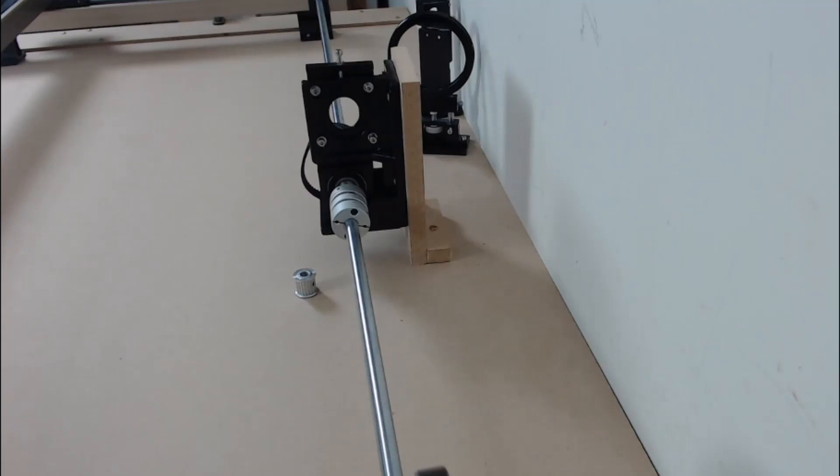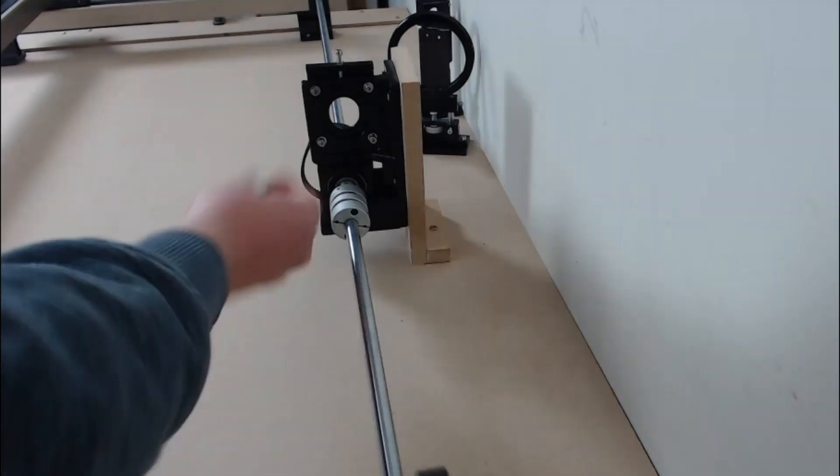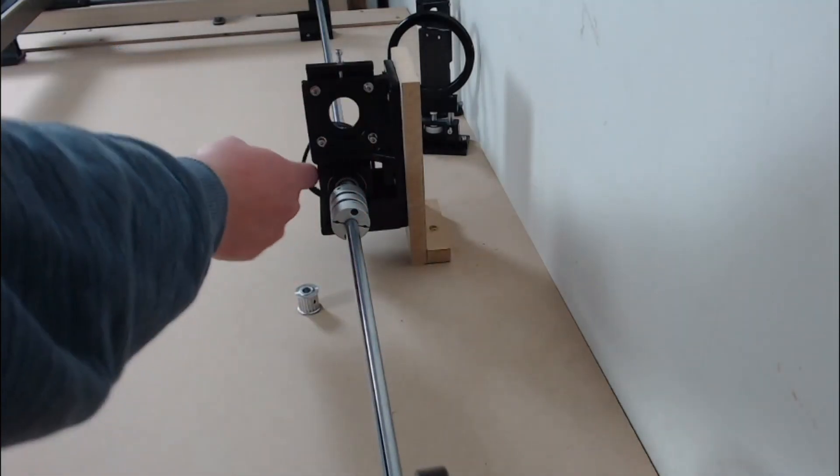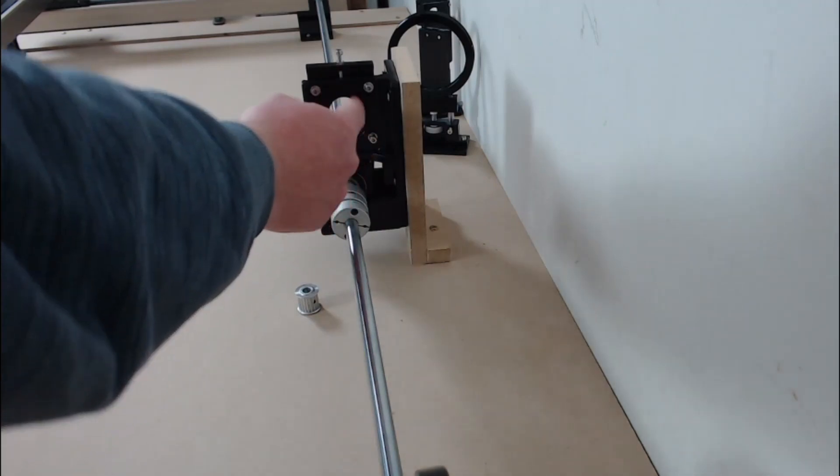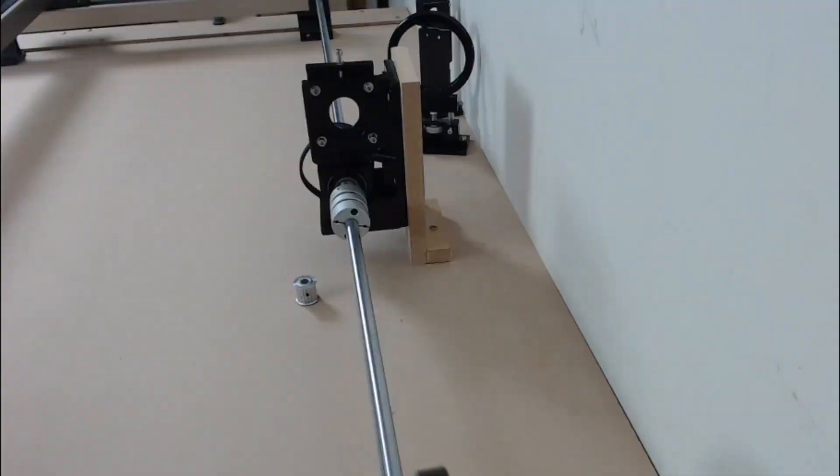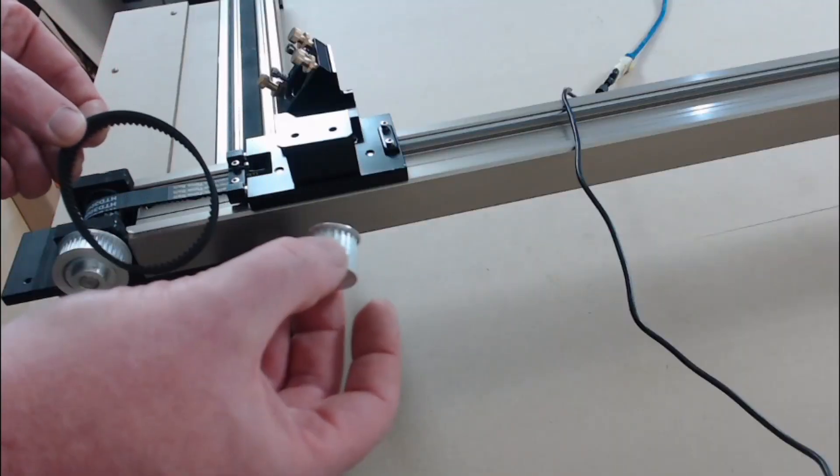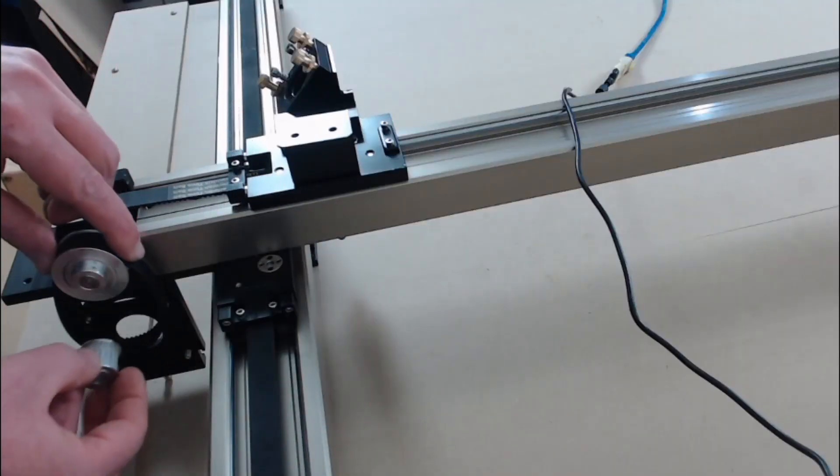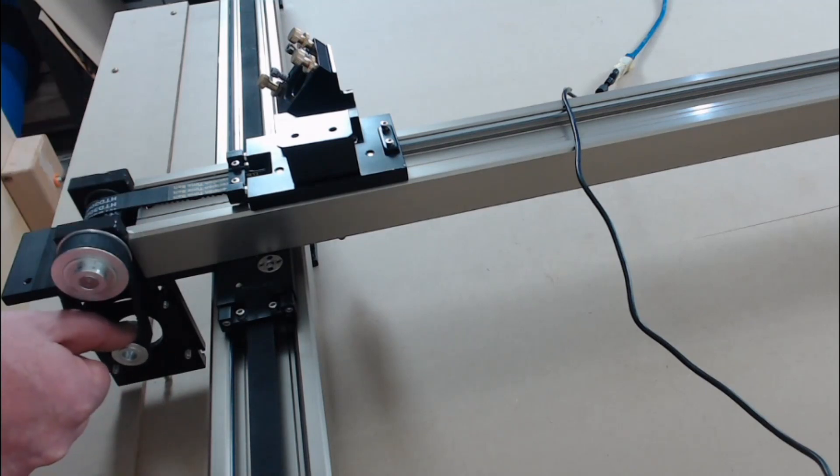So there are two gears that come with it as well so this gear will go on the y-axis motor which already has the belt attached. When the y-axis motor goes there the gear will go on to that belt and the other belt and gear will go on to the other stepper motor when it's attached to this mount.